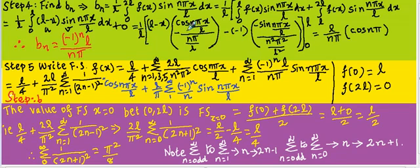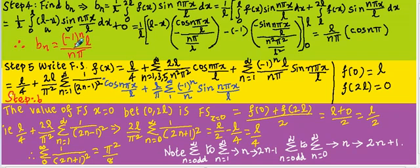Step number 5: write the Fourier series expansion for f(x). f(x) equals a0/2, and since a0 = L/2, a0/2 = L/4. Plus sigma n = 1, 3, 5 to infinity (odd values only, since an = 0 for even n) of 2L/(n²π²)·cos(nπx/L), plus sigma n = 1 to infinity of minus 1/(nπ)·sin(nπx/L).